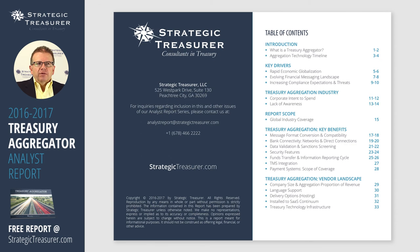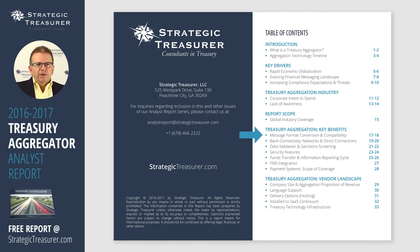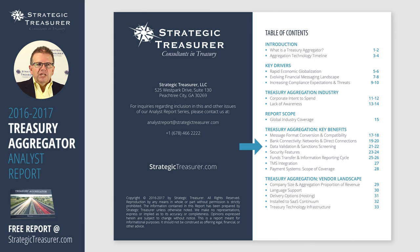So what areas does this report cover? First, it talks about the key drivers of what makes organizations use Treasury Aggregators. It covers details about message format conversion and compatibilities to know what aggregators handle which types of formats and can support different types of banks. It also discusses and covers bank connectivity — how you can get connected to different banks and various types of networks. It covers in some depth data validation and sanctioned screening capabilities, whether using regular lists or private lists.